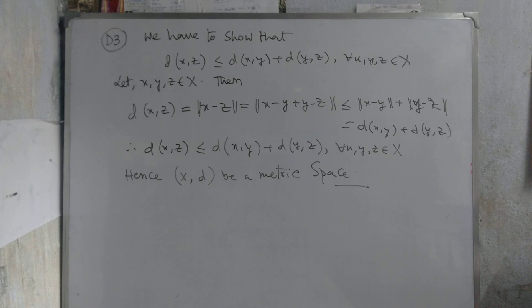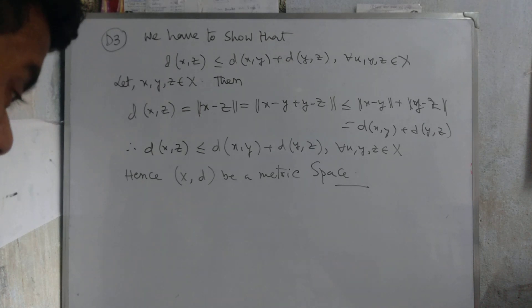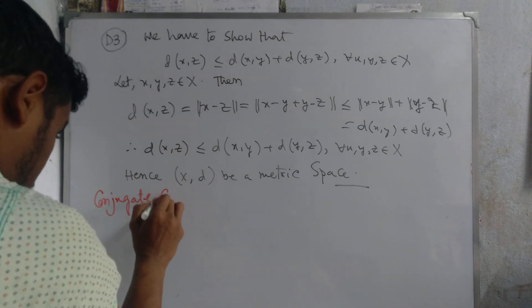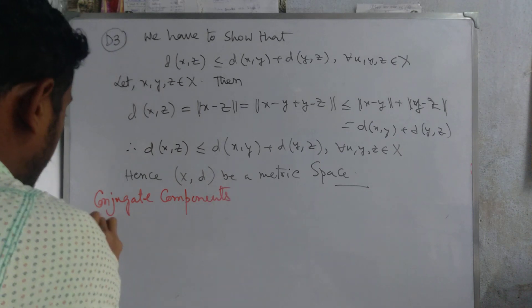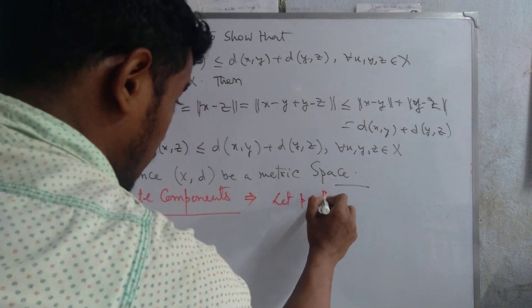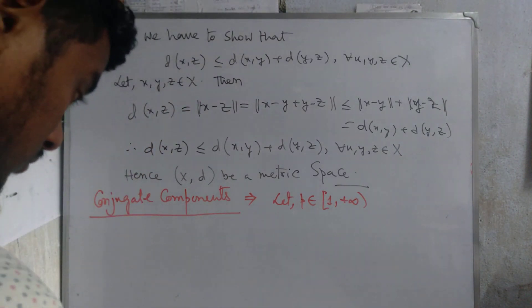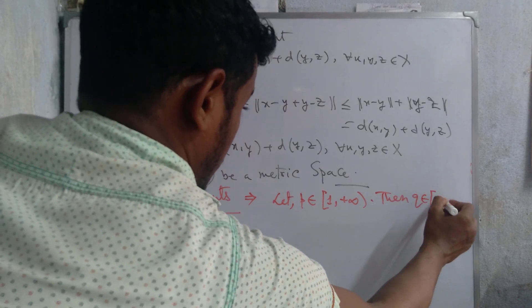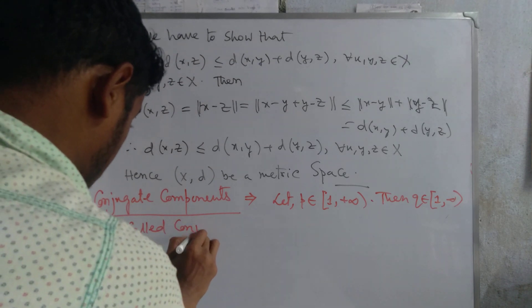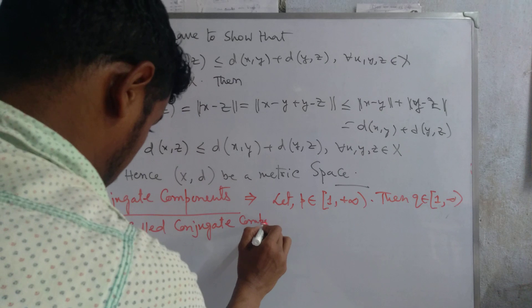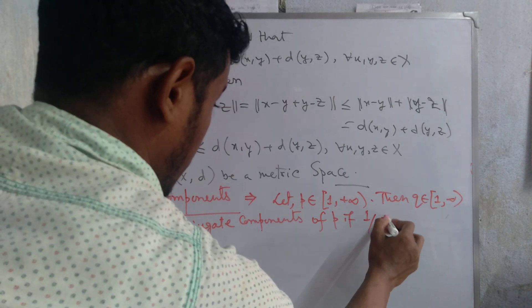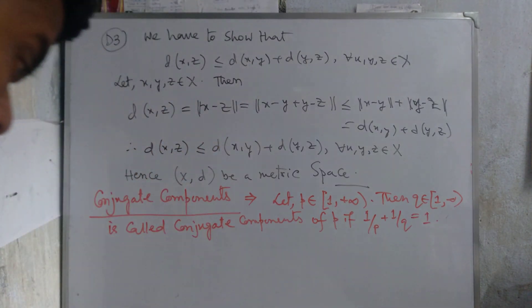We now define conjugate exponents. Let p belong to (1, +∞). A number q is called the conjugate exponent of p if 1/p + 1/q = 1.